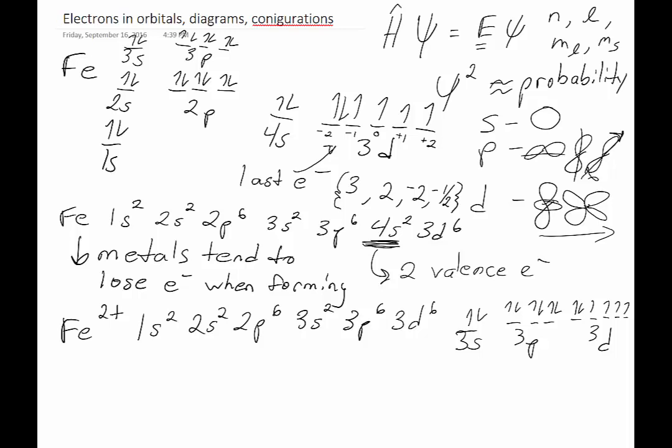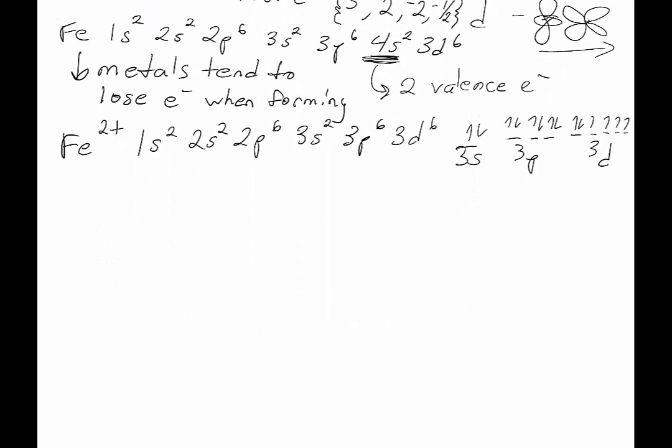Finally, what would be the noble gas configuration for both iron and iron two plus? When you look at iron, iron has an atomic number of 26. The noble gas that is lower than an atomic number of 26 is argon, with an atomic number of 18. Argon is also equivalent to 3s2, 3p6. So everything that comes after that is in the noble gas configuration for iron: 4s2, 3d6 for the metal, and simply 3d6 for the ion.